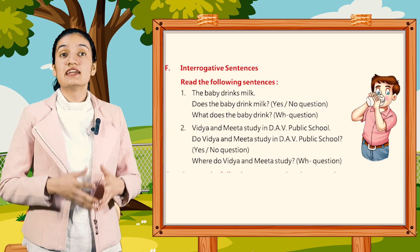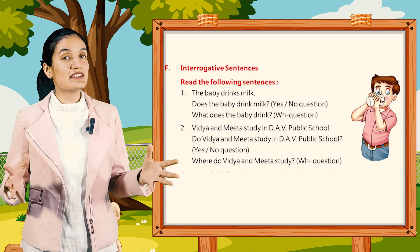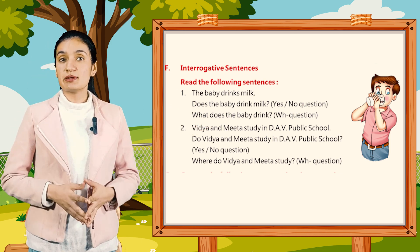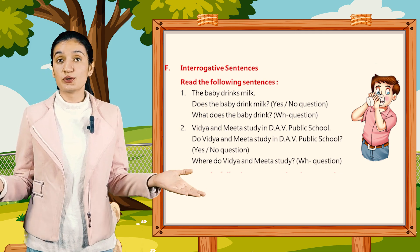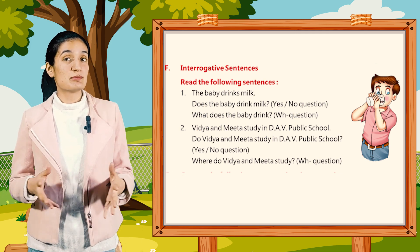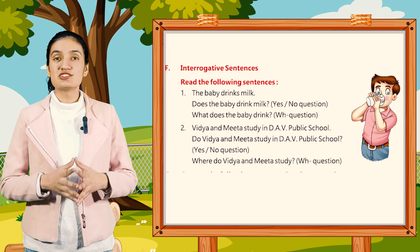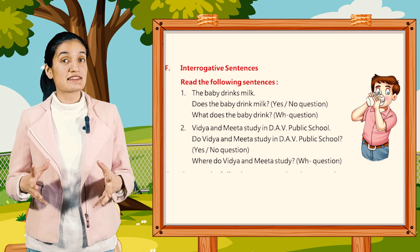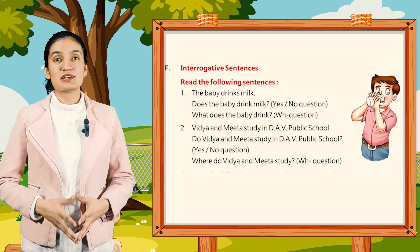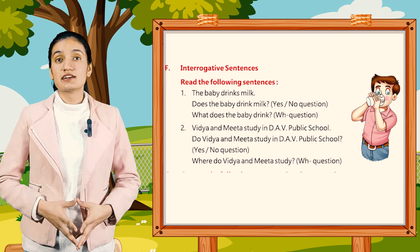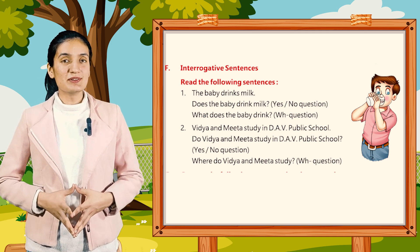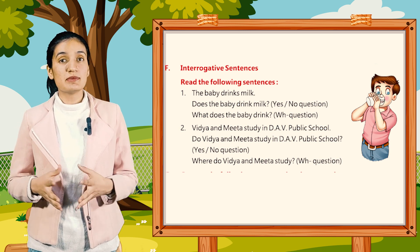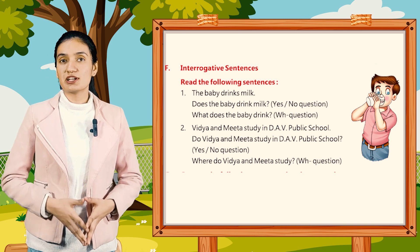Now Part F: interrogative sentences. Read the following sentences. First, the baby drinks milk — does the baby drink milk? (Yes/No question.) What does the baby drink? (Wh-question.) Second, Vidya and Meeta study in DAV Public School — do Vidya and Meeta study in DAV Public School? (Yes/No question.) Where do Vidya and Meeta study? (Wh-question.)